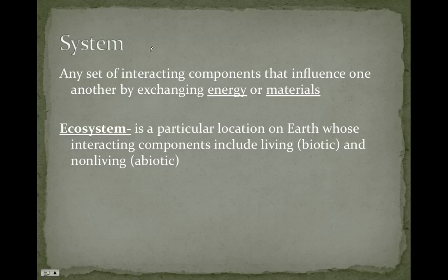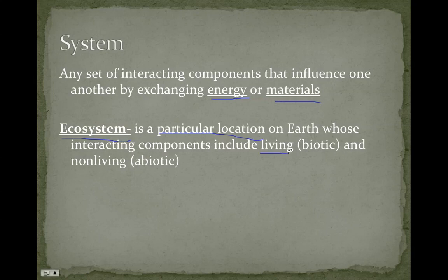When we talk about a system, it's all or any of the interacting components that are influenced by one another, and they exchange energy or materials. In this case, we're going to talk a lot about an ecosystem. You should have known an ecosystem's definition from your biology class, but here's the definition: it is a particular location on Earth that includes both biotic and abiotic components interacting together to create that particular system.